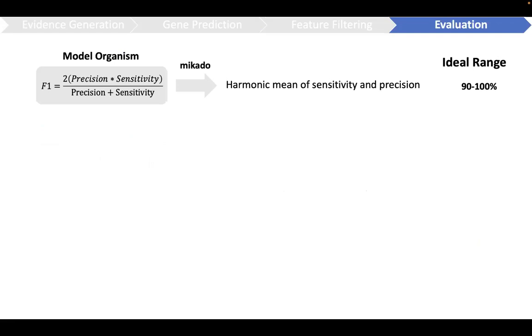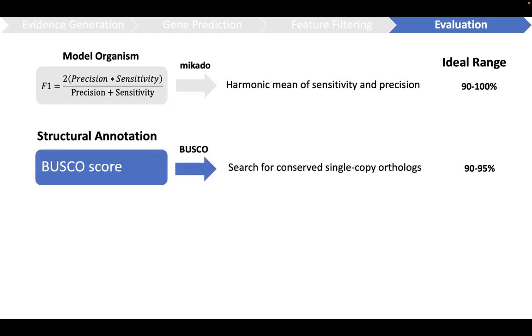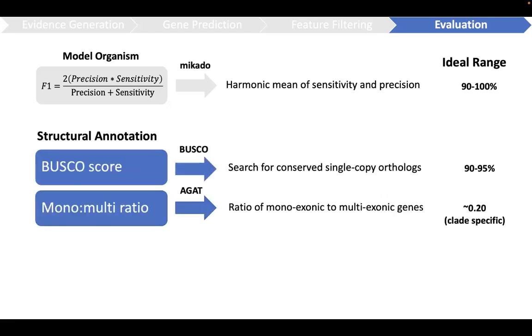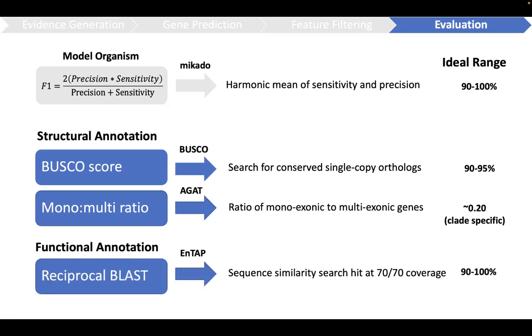When working with model organisms, the F1 score will be the best indicator of annotation quality. However, the majority of individuals will be working with non-models. Therefore, EASL outputs other metrics, including BUSCO score, model multi-ratio, and reciprocal BLAST to assess annotation quality.